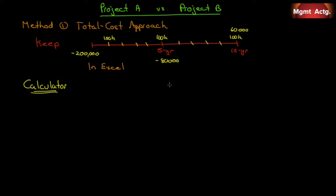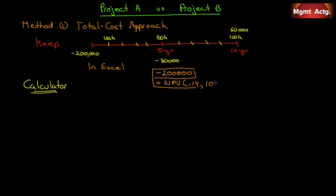Now we're ready to model it in Excel. We'll use two cells so we can see the difference in cash flows. All cash flows at t=0 go into the first cell — enter negative $200,000. In the next cell, enter equals NPV, discount rate 14%, then cash flows: $100,000 for years one through four, year five is only $20,000 (that's $100,000 minus $80,000), then back to $100,000 for years six through nine, and year ten is $160,000.